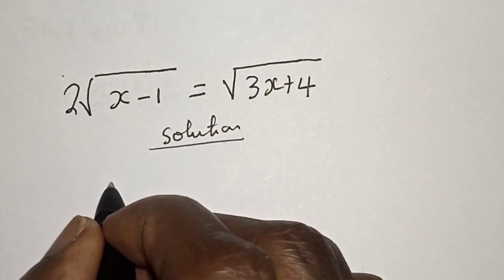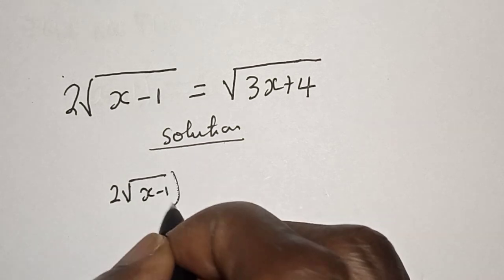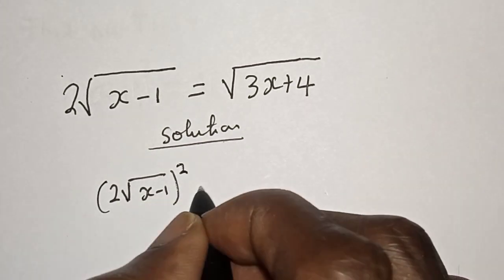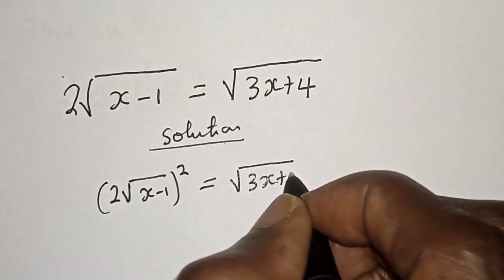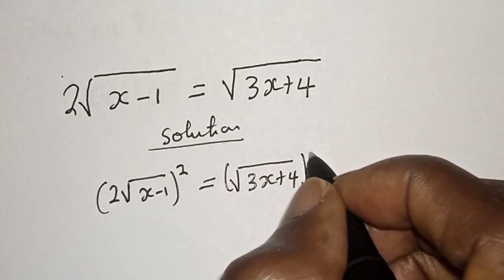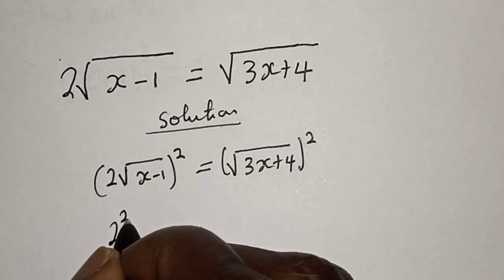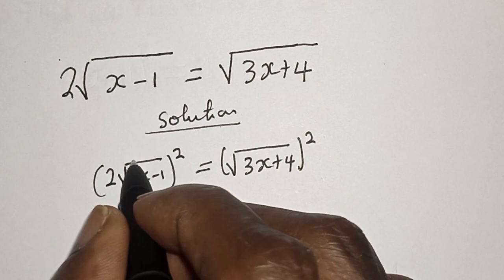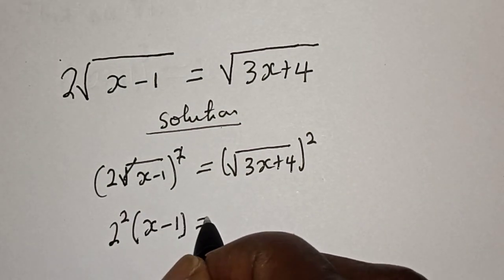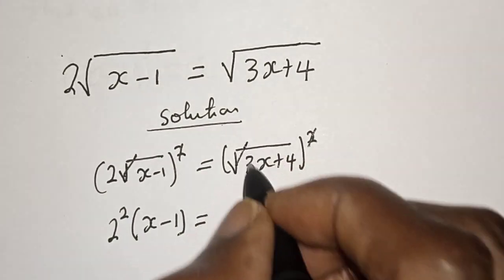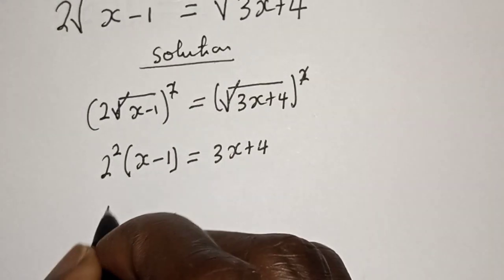Let's square both sides. We have 2 square root of s minus 1, all squared, is equal to square root of 3s plus 4, all squared. If you square this, we have 2 squared, and this bracket cancels, giving s minus 1.